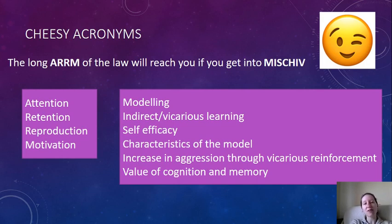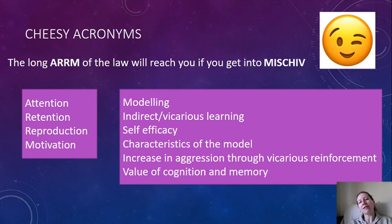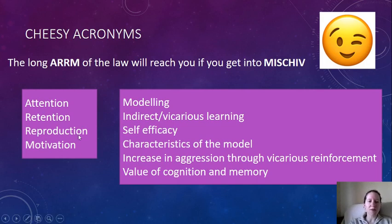In your booklet there are some acronyms to help you remember key details in an exam. The acronym ARRM covers the things that happen when social learning takes place: we pay Attention to a model, we Retain the information, we Reproduce the behavior if capable, and our Motivation determines whether we do so.